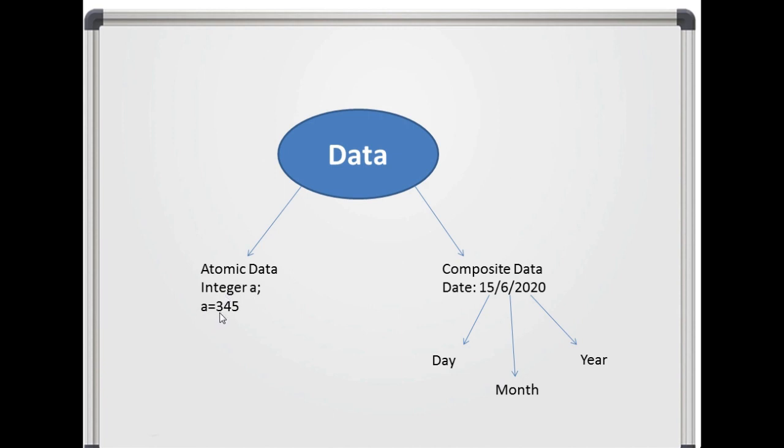you can't divide a into 3, 4, 5. There is no meaning for separation of value 3, 4, 5. But when you are using composite data, like date, there is separate meaning for day, for month and for year. You can decompose this data.